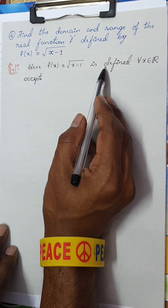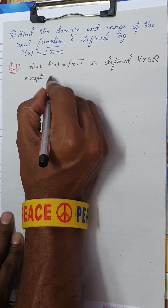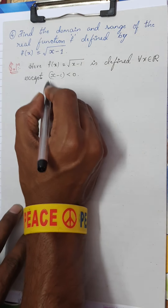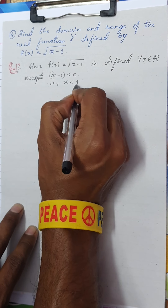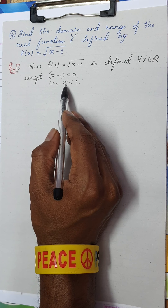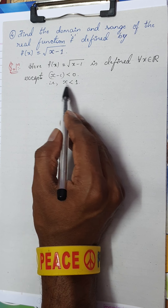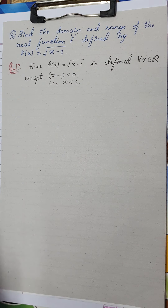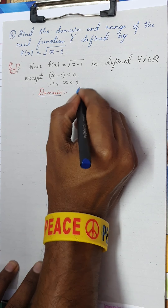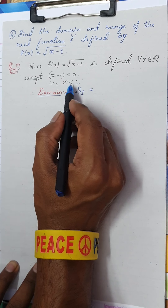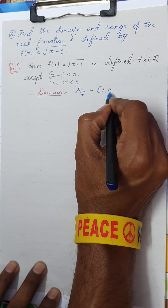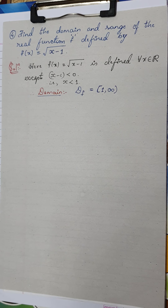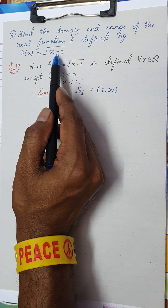The function f(x) = √(x − 1) is defined for all real x except where x − 1 < 0, i.e., x < 1. So x must be greater than or equal to 1. Therefore the domain D(f) = [1, ∞).